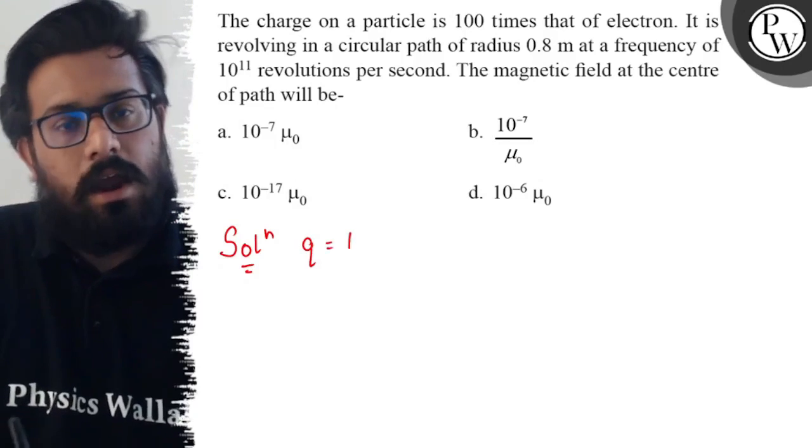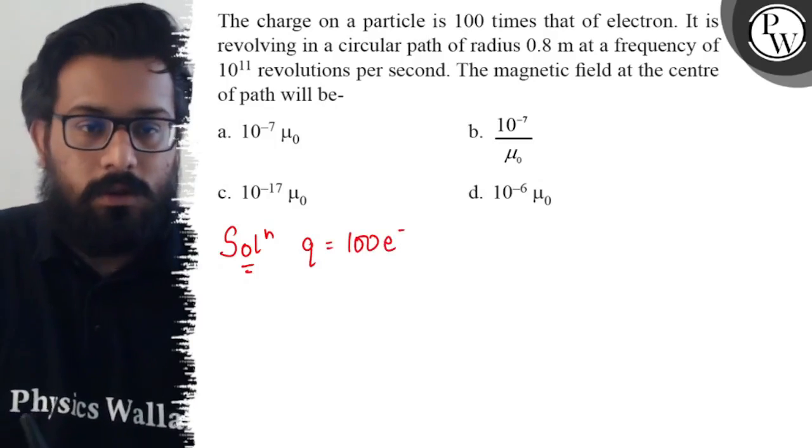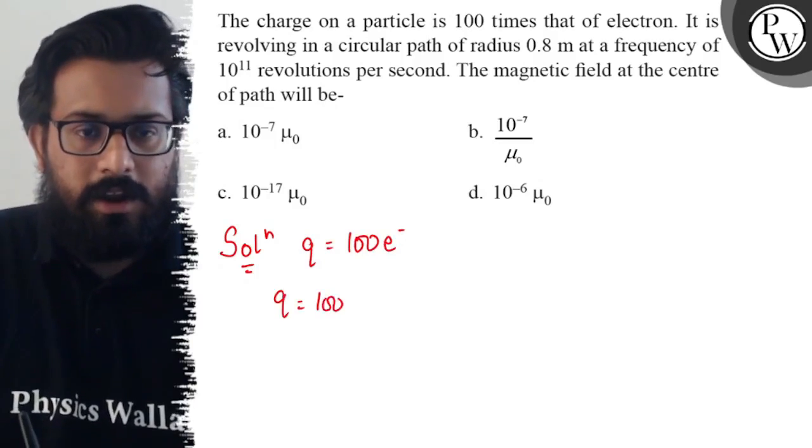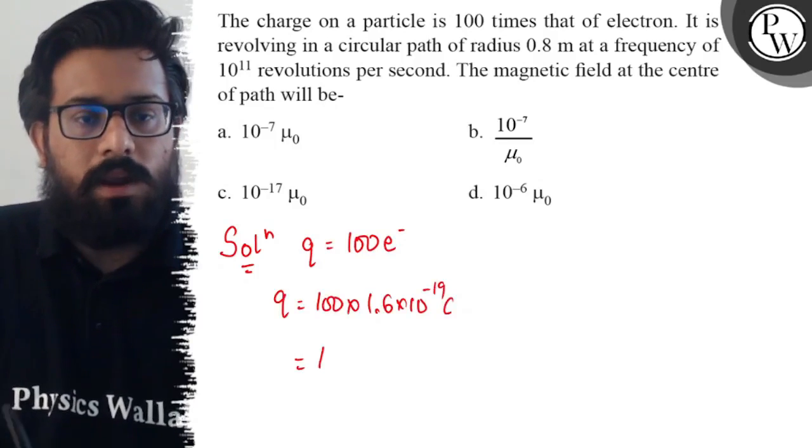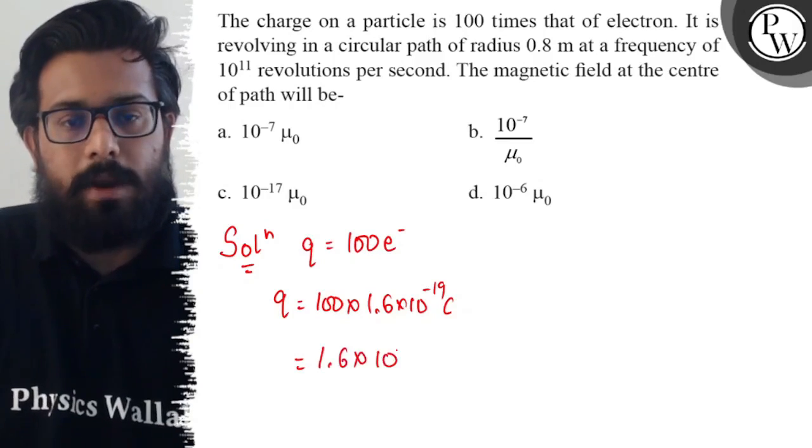The value of the charge is given as 100 times the charge of electron, so this can be written as 100 × 1.6 × 10^-19 coulomb, or 1.6 × 10^-17 coulomb.